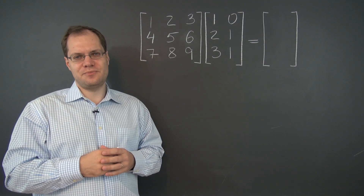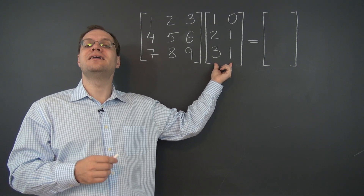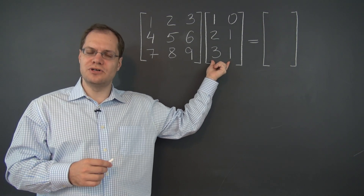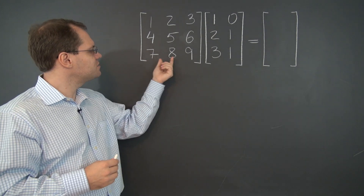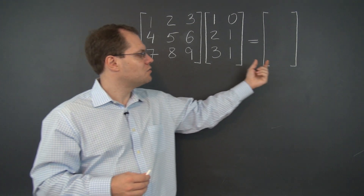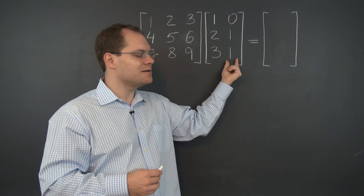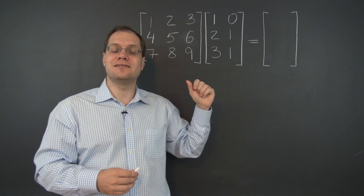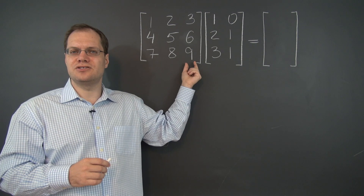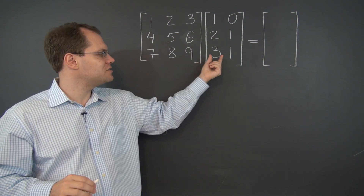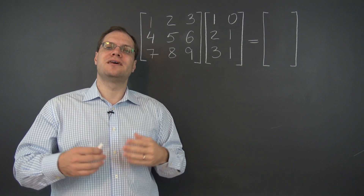We will now extend the definition of matrix multiplication to matrices on the right that have more than one column. This extension is very simple: now that we have two columns in the matrix on the right, we simply have to calculate two linear combinations of the columns of the matrix on the left. So the answer will contain two columns — one for each linear combination. It's two smaller problems in one.